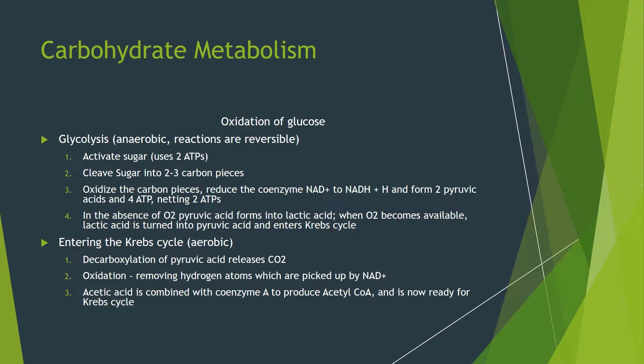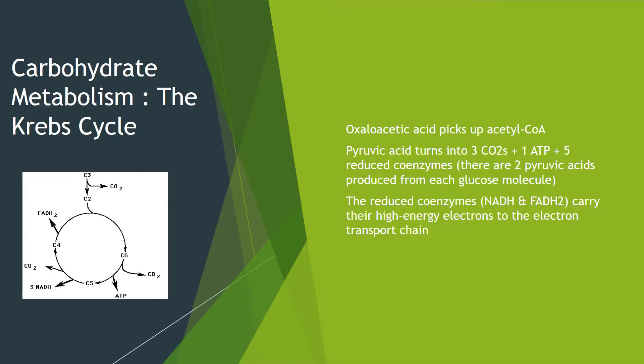The Krebs cycle, also known as the citric acid cycle, starts with decarboxylation of pyruvic acids which releases CO2, and oxidation removing hydrogen atoms which are picked up by NAD. Acetic acid is combined with coenzyme A to produce acetyl-CoA, which is now ready for the Krebs cycle. In the Krebs cycle, pyruvic acid turns into three CO2s, one ATP, and five reduced coenzymes. There are two pyruvic acids produced from each glucose molecule. The reduced coenzymes carry their high-energy electrons to the electron transport chain.